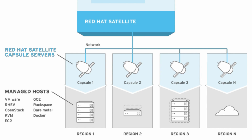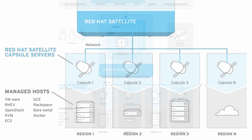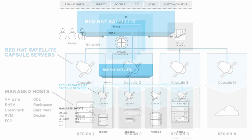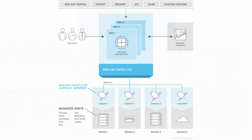For example, you might have a capsule servicing a data center in New York, and another capsule servicing a data center in London. Satellite 6 can then provision machines from either location, and these machines will boot using the capsule in their respective locations.